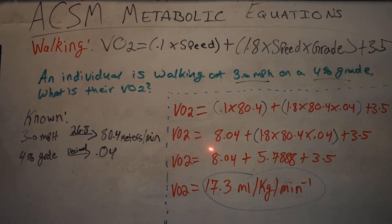Don't do anything else, just do that and then rewrite your equation. VO2 equals 8.04 plus this right here in the parentheses plus 3.5.